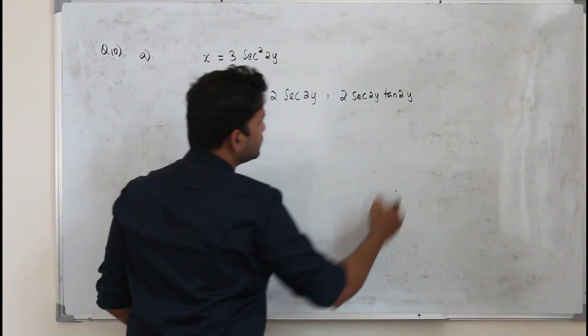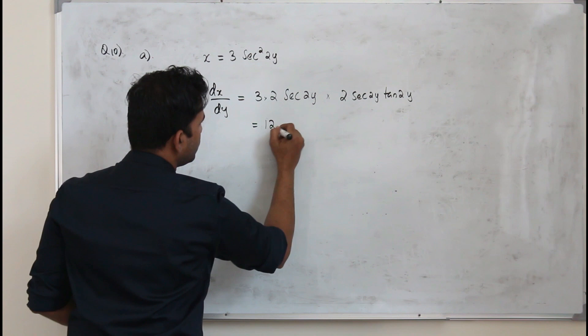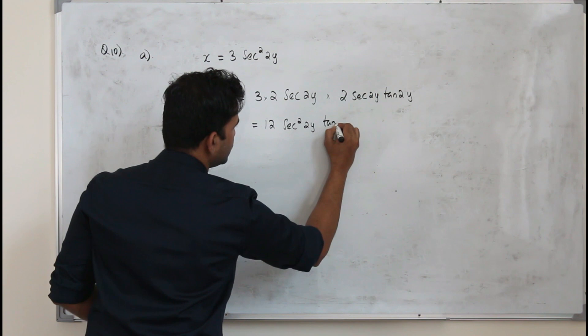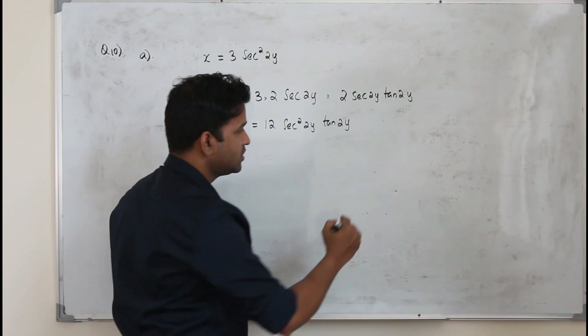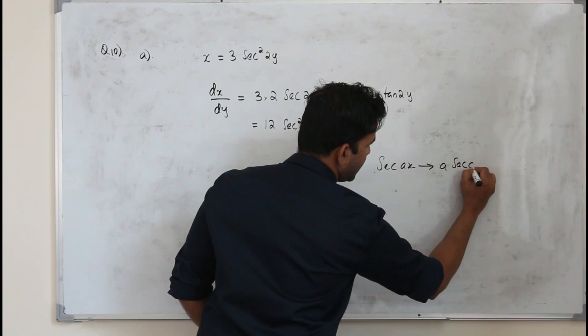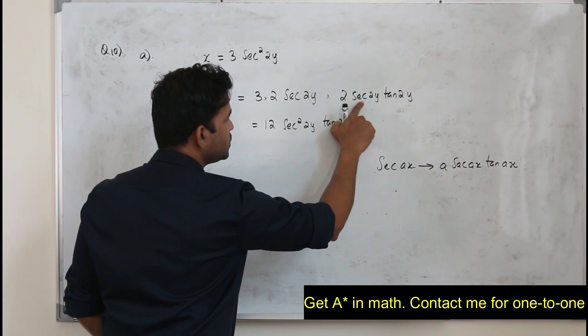Simplify: 2 times 2 times 3 gives 12. So dx/dy equals 12 sec squared(2y) times tan(2y). That's the derivative. Here you need to know the chain rule and how to apply it. The derivative of sec(ax) is a·sec(ax)·tan(ax). So in this case it's 2 sec(2y) times tan(2y).